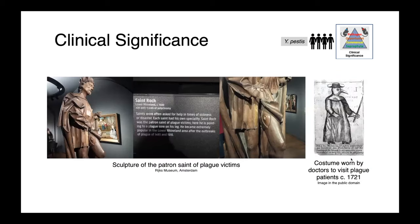We're going to start with plague because it's such an interesting organism that has played such an important role in human history. This is a picture of a sculpture of Saint Rock at the Rijksmuseum in Amsterdam — the patron saint of plague victims. The sculpture shows one of the classical lesions associated with plague: a bubo, an abscessed lymph node, which commonly occurs in the groin and armpits. Before germ theory, doctors who visited plague victims would wear elaborate costumes with large beaks, often filled with incense to mask the horrible aromas associated with diseased populations.